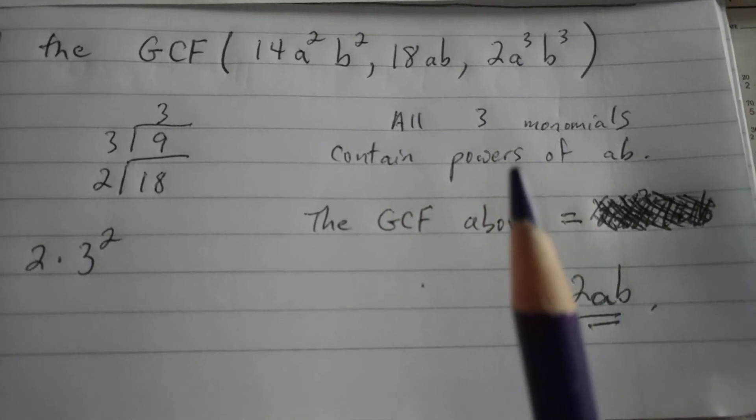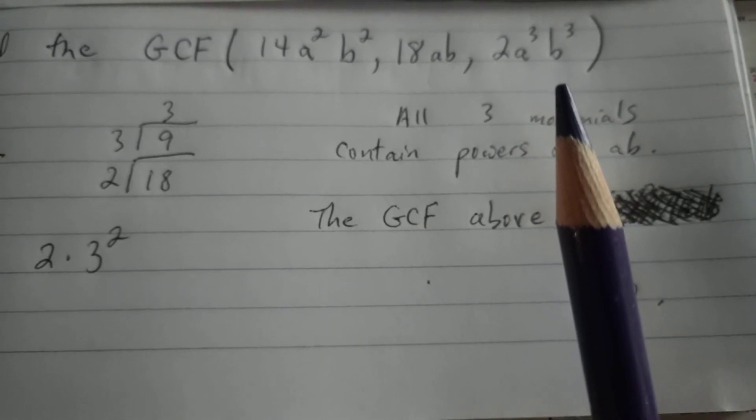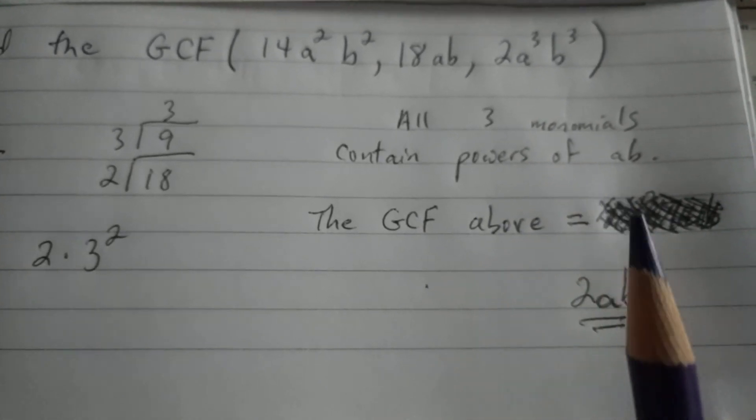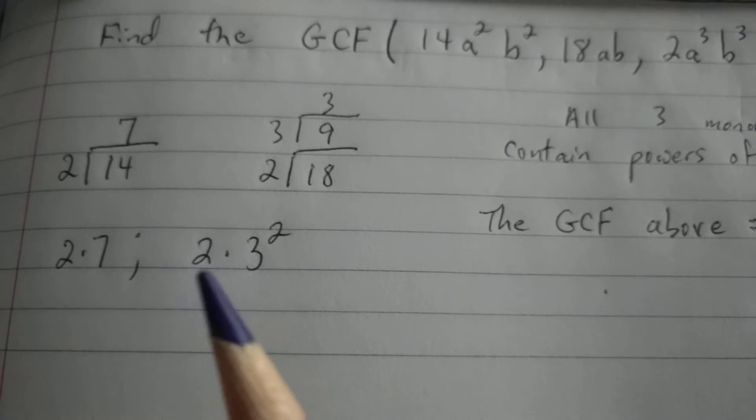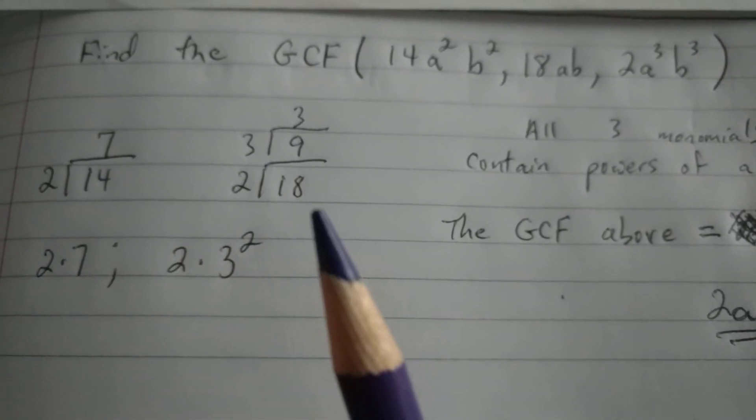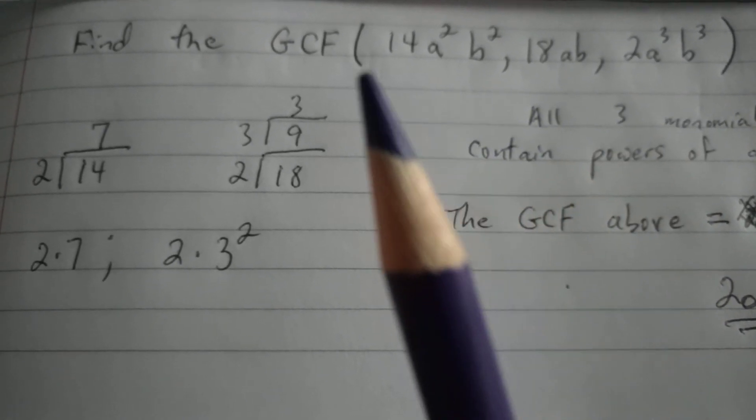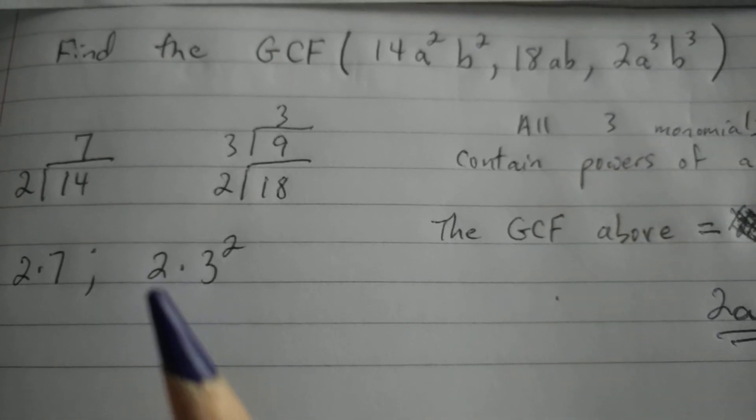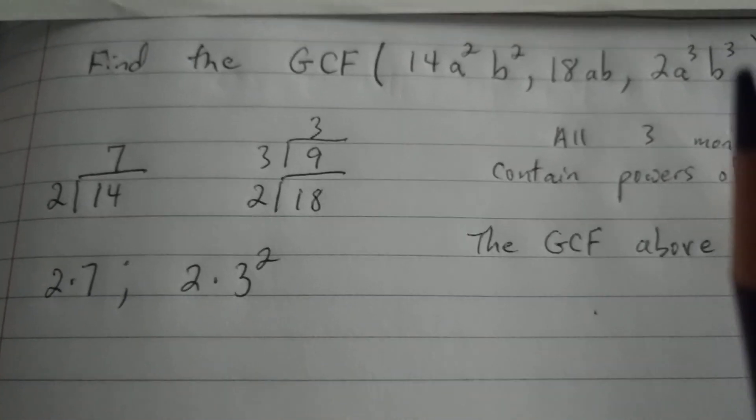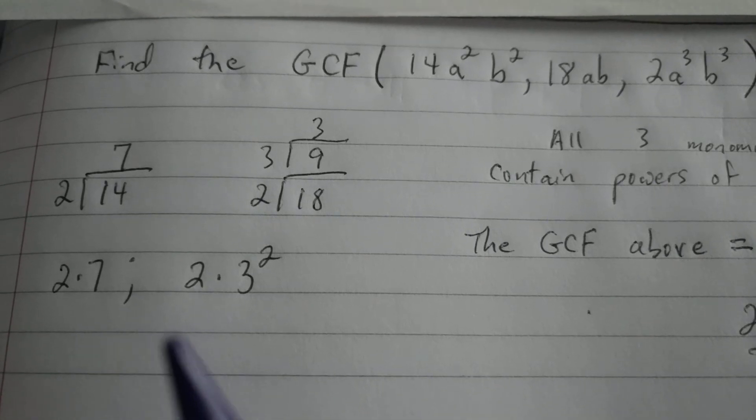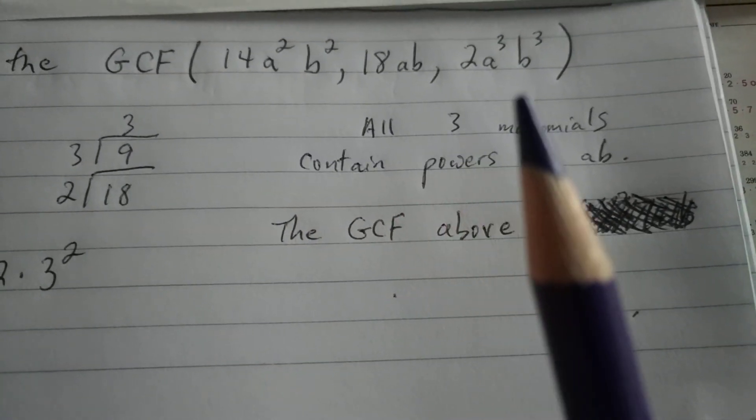Notice that all three of the monomials contain powers of ab, a²b², ab itself, and a³b³. All three monomials contain powers of ab. So we take the greatest common factor by finding the greatest common factor of the two coefficients along with 2 itself. So there's three coefficients we consider, 2, 18, and 14. Two is clearly a factor of itself. Two is a factor of 18. Two is a factor of 14. Two is the only common factor of these three, and therefore it's the greatest common factor.